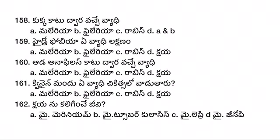The first question is: a dog bite causes which disease? Options: A) Malaria, B) Filaria, C) Rabies, D) options A and B. The answer is Rabies — a dog bite causes Rabies.